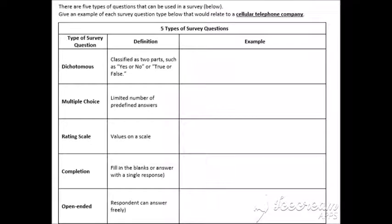Last one. There are five types of questions that can be used in a survey. So all the types of questions are below. Give an example of each survey type that you can relate to a cellular telephone company. So I'm going to type this one out. So dichotomous. So difficult, but basically, if you look at the word di, so like choose, there's just two answers. True, false. Yes. No. So you can say, do you have a cell phone? Very easy. Yes. No. Specifically, do you have an iPhone?